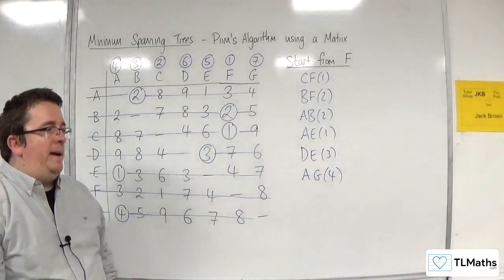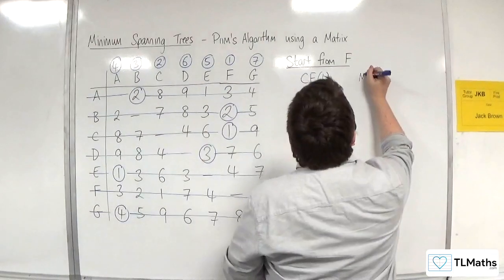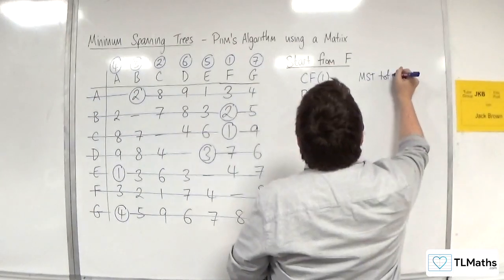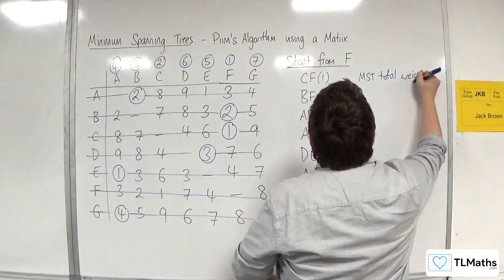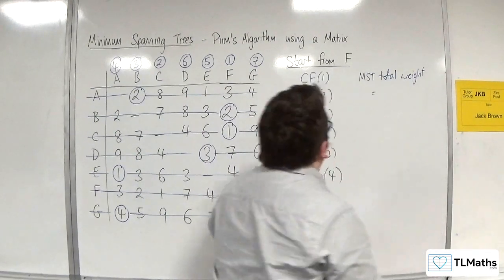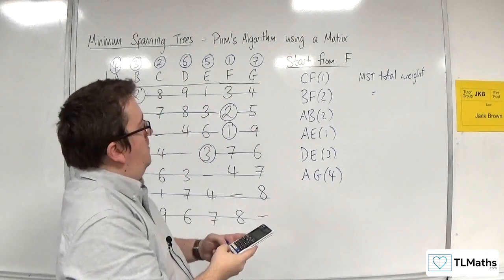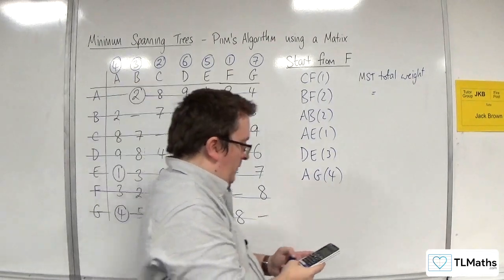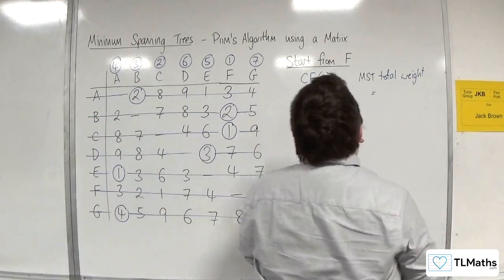These are the edges in my minimum spanning tree. Minimum spanning tree, total weight, or total length, or whatever the context is. We've got 1 plus 2 plus 2 plus 1 plus 3 plus 4. Not sure why I need the calculator. 13.